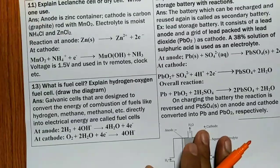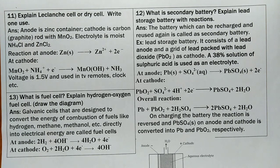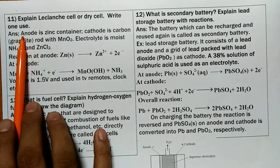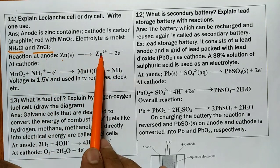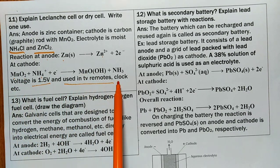Explain the Leclanche cell or dry cell. The anode is a zinc container; the cathode is a carbon rod with MnO₂. The electrolyte is NH₄Cl and ZnCl₂. Anode reaction: Zn → Zn²⁺ + 2e⁻. Cathode reaction: MnO₂ + NH₄⁺ + e⁻ → MnOOH. The voltage of this cell is 1.5 volt. It is used in remotes, clocks, and similar battery-operated devices.